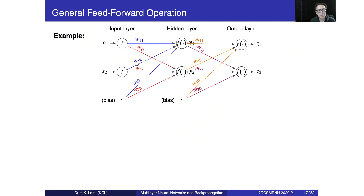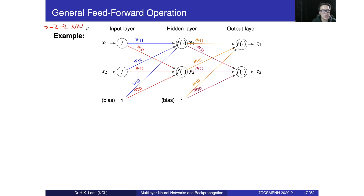This example will give some more details and explanation about the previous equations about the neural network. This is a very simple neural network — we call it a 2-2-2 neural network. The first two means we have two inputs x1 and x2, the second two means we have two hidden nodes in the hidden layer, and the third two means we have two outputs z1 and z2.